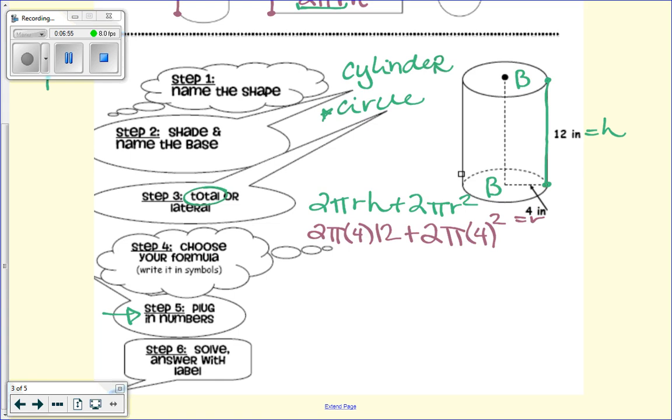Then you can put each side into your calculator if you want. So now we're going to start solving. 4 times 12 is 48. 48 times 2 is 96. So that's 96π for our lateral. 4 squared is 16. 16 times 2 is 32π. What's 96 plus 32?